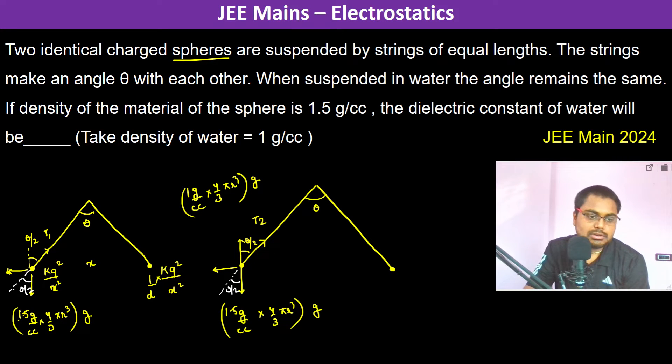So therefore tan theta by 2 in this case is 1.5 grams per cc into 4 by 3 pi r cubed divided by K Q squared by X squared should be equal to...